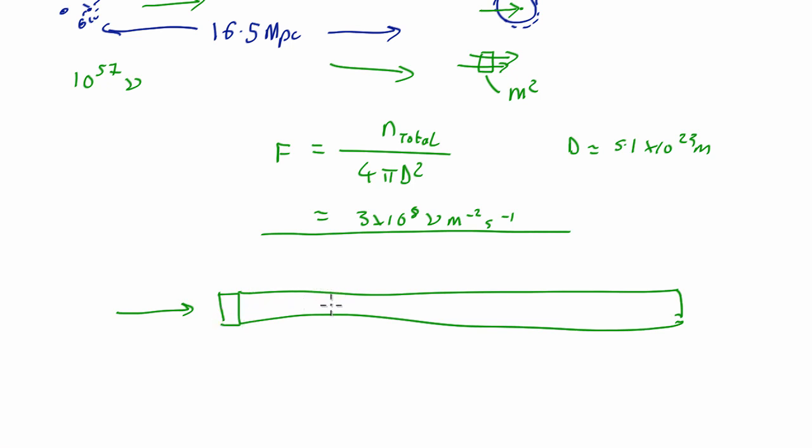Of course, Super Kamiokande isn't designed like that, it's actually a much more round shape. But that doesn't actually matter, because let's say we had instead two square metres and only half the length, or three square metres and one third the length. The flux, the total amount of neutrinos hitting, will go up proportional to the area, but the number of atoms in each column will go down proportional to the area, and the two will actually cancel out.